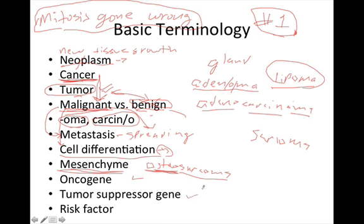Two important genetic terms are oncogene and tumor suppressor gene. For undergraduate pathophysiology, you don't need to dive deeply into cancer genetics, but basically an oncogene is a gene that promotes cancer development, while tumor suppressor genes are designed to prevent cancer development.